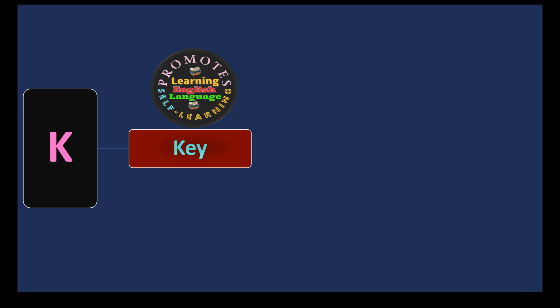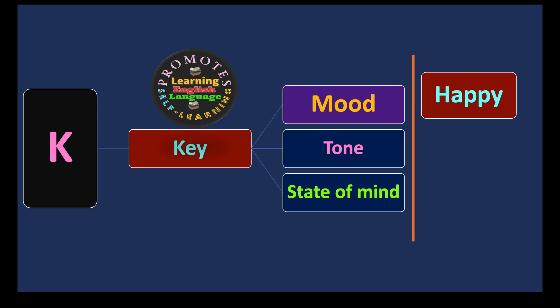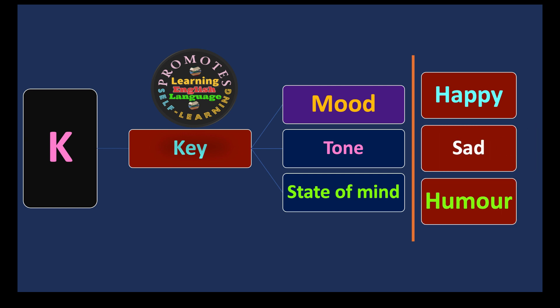K stands for Key, which refers to mood, tone, and your state of mind. Your state of mind is an important factor in the way you communicate. Your tone can be happy, sad, or humorous. A state of mind is very important for communication to take place.